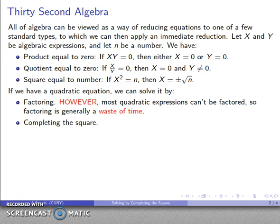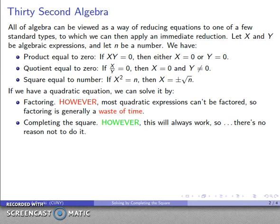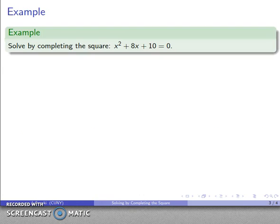The other possibility is completing the square. What that means is I rewrite my equation in the form x squared equals something, and then I can get x equal to plus or minus the square root of n. There's no downside to this — it always works.